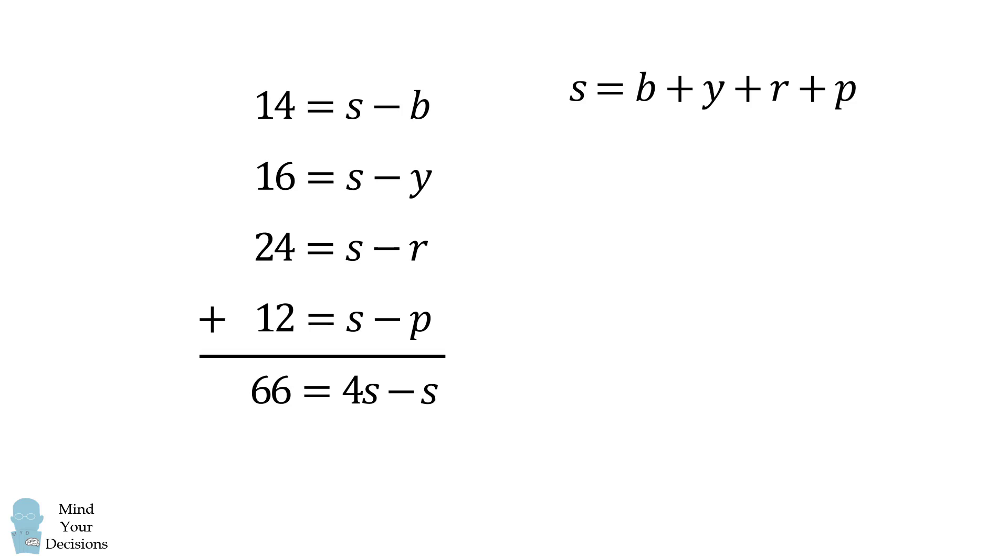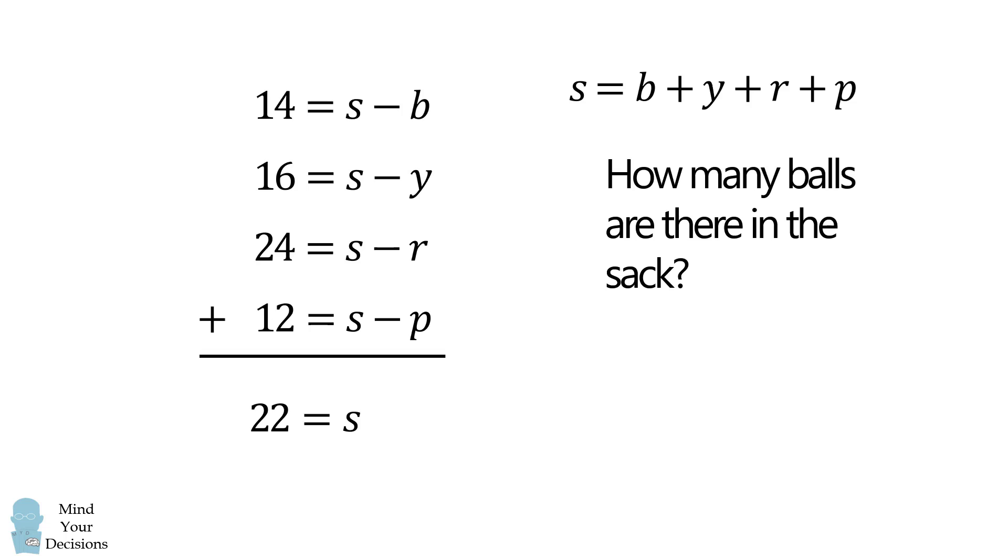We'll substitute that in. We then have 4s minus s, which is equal to 3s. Thus, 66 is equal to 3s. We divide both sides by 3, and get that s is equal to 22.